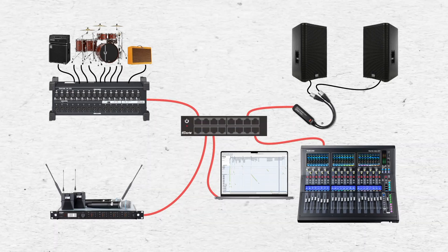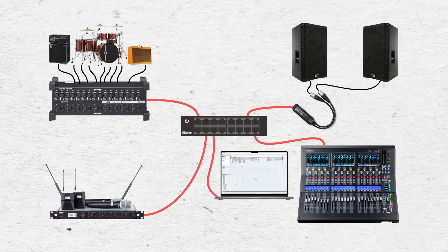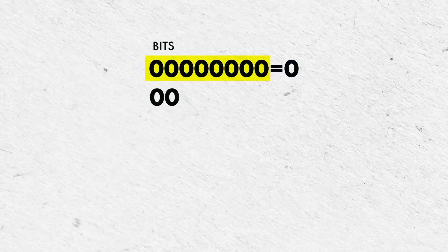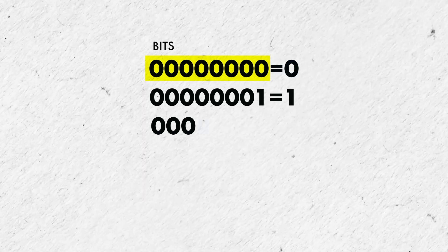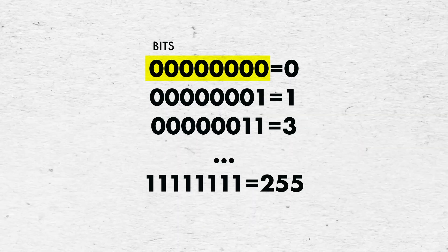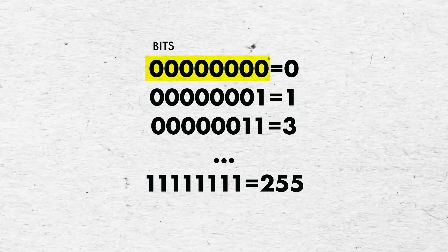Let's also connect a laptop to the switch and open up the free Dante Controller software. We can see in Dante Controller that each device now has an IP address. Each field in an IP address can range from 0 to 255 — a total of 256 values — represented by 8 bits, which are either 0 or 1. All 0s equals 0, all 1s equals 255, and every other combination of 0s and 1s represents a number between 0 and 255.